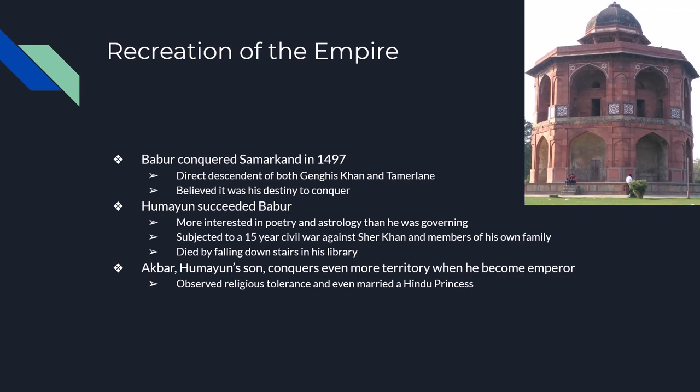The first Mughal is Babur. He reconquered Samarkand in 1497 and began to recreate the empire of Timur. Babur is actually a direct descendant of both Tamerlane and Genghis Khan, and he thought it was his destiny to control political power. By the time he dies in 1530, he controls all of Northern India, parts of Uzbekistan, Afghanistan, Pakistan, a little bit of Persia — the whole Central Asia region. He's not really a big fan of India; he doesn't like the caste system or Hinduism. He is a very strong proponent of Islam.